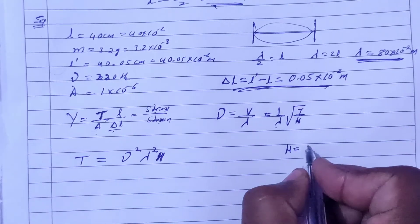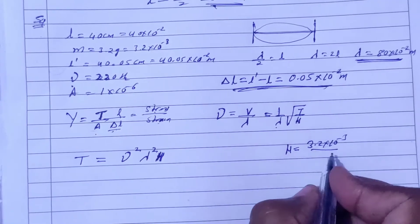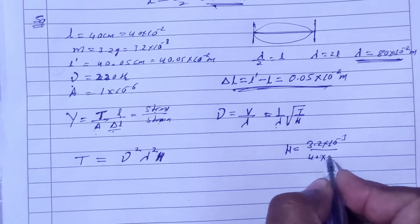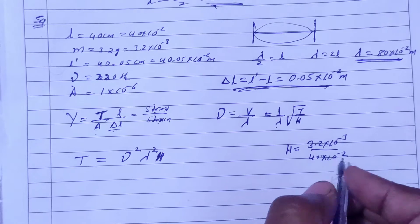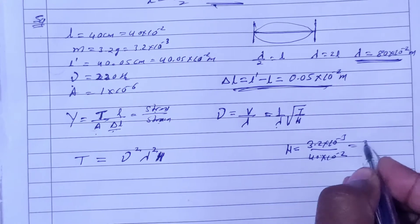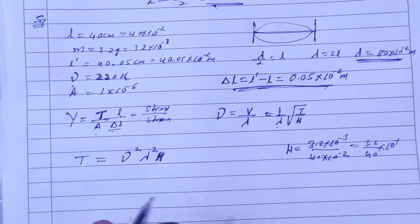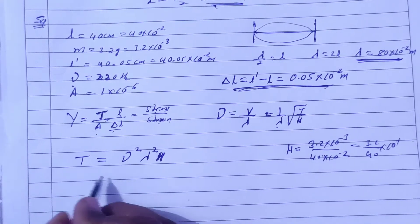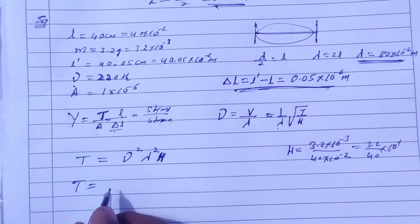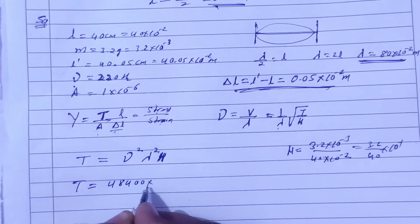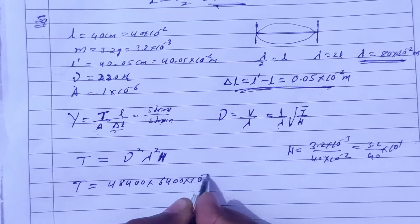Let's calculate mu (mass per unit length). Mass is 3.2 × 10⁻³ kg and length is 40 × 10⁻² m, so mu = 3.2/40 × 10⁻¹. Now substituting: frequency squared is 220² = 48400; lambda squared is 80² = 6400 × 10⁻⁴; and mu is (3.2/40) × 10⁻¹.